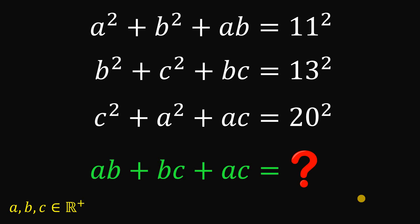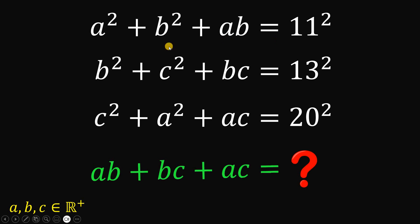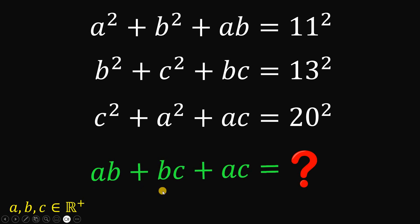For today's video, we will answer a math challenge given by one of our followers from India. The question goes like this: what is the value of AB plus BC plus AC? Given these three equations: A squared plus B squared plus AB equals 11 squared; B squared plus C squared plus BC equals 13 squared; and C squared plus A squared plus AC equals 20 squared, wherein A, B, and C are all positive real numbers.